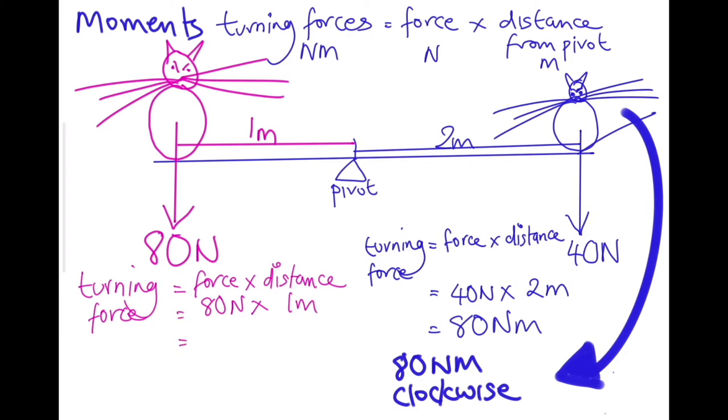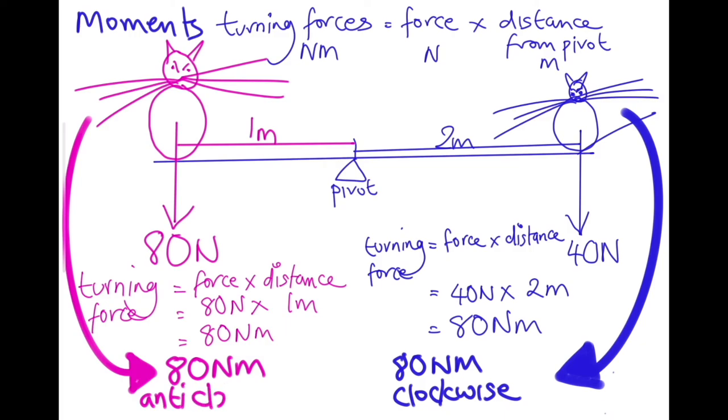Okay, just like before, we know that these, because they're turning forces, have to have either clockwise or anti-clockwise. Well, this one will be anti-clockwise. Let's have a look. So on this side of our seesaw, our pink cat has 80 newton meters of anti-clockwise turning force.